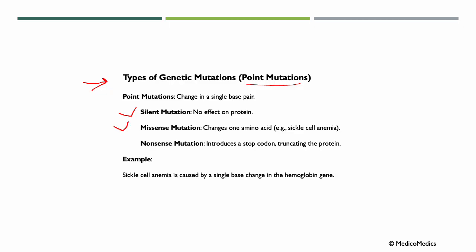Then we have missense mutations, where a single nucleotide change results in a different amino acid being incorporated into a protein. This can affect protein structure and function, sometimes leading to diseases. An example is sickle cell anemia, caused by a mutation in the hemoglobin gene where glutamic acid is replaced by valine.